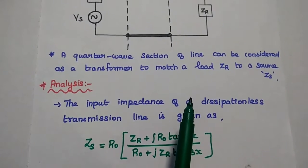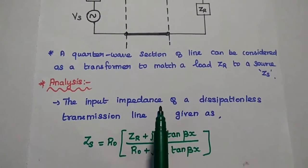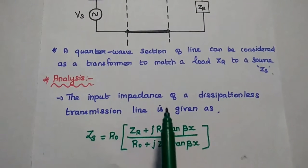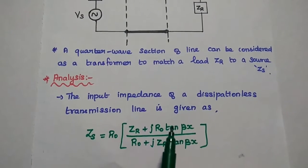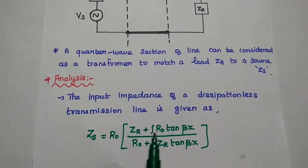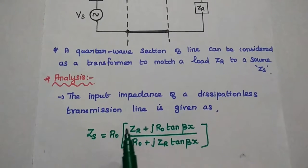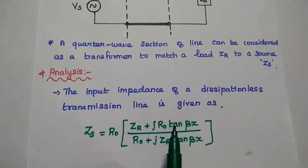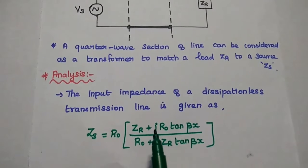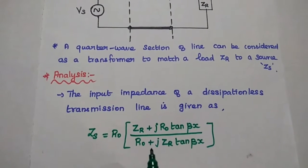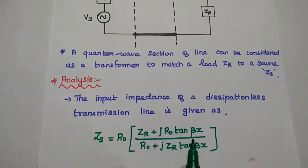Let's analyze how to match the load impedance with the source impedance using lambda by 4. For that we can consider the input impedance of a dissipationless line. We have already derived this equation, so we can directly use this expression here. The general expression for the input impedance of a dissipationless line is: Zs equals R naught into ZR plus j R naught tan(βx), divided by R naught plus j ZR tan(βx).